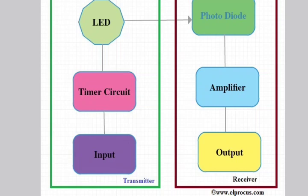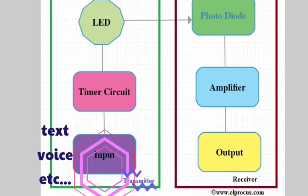The block diagram of Li-Fi system is shown below. The transmitter section includes the input, timer circuit and LED bulb. The input of transmitter can be any kind of data, like text, voice, etc.